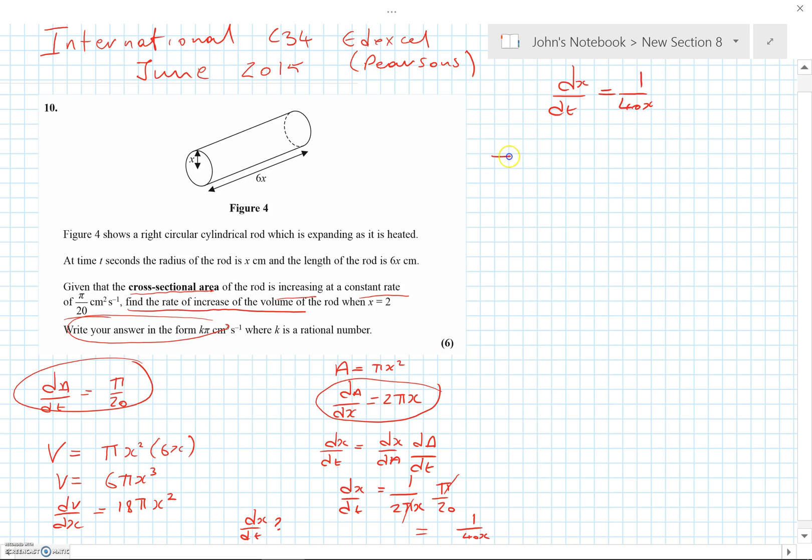So we can now say the required dV/dt. dV/dt is equal to dV/dx times dx/dt. Now dV/dx is equal to 18πx² and dx/dt is 1 over 40x.